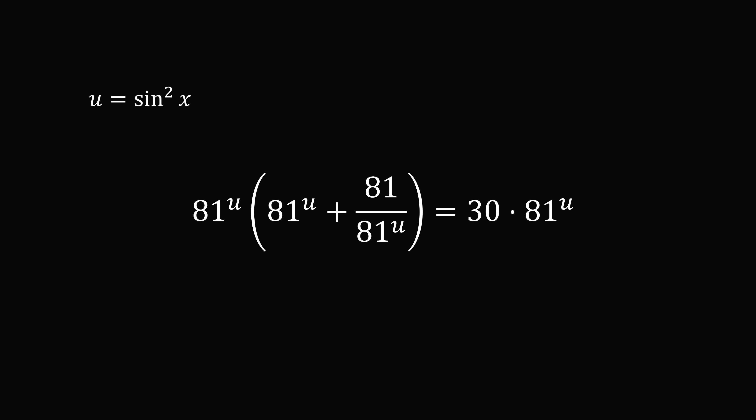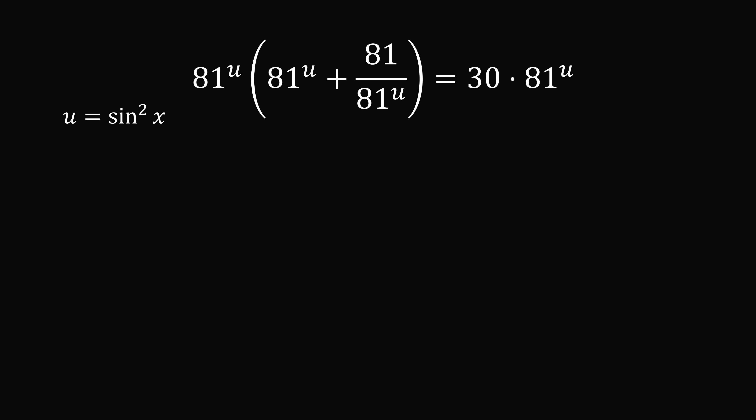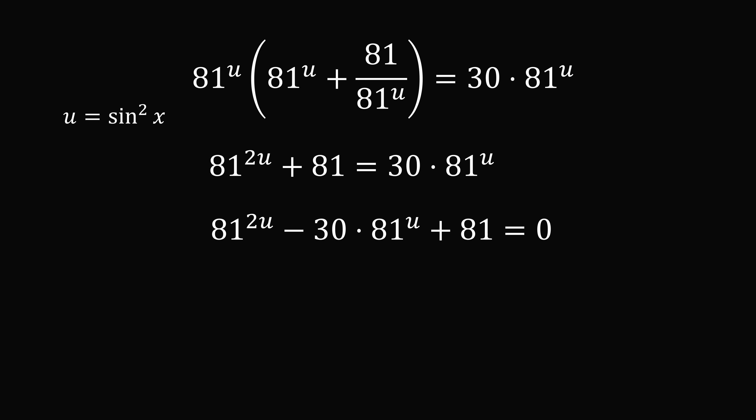So let's further simplify this equation. We'll distribute through on the left hand side. So we have 81 to the power of 2u plus 81 is equal to 30 multiplied by 81 to the power of u. We'll subtract 30 multiplied by 81 to the power of u from both sides. So we have 81 to the power of 2u minus 30 multiplied by 81 to the power of u plus 81 is equal to 0.